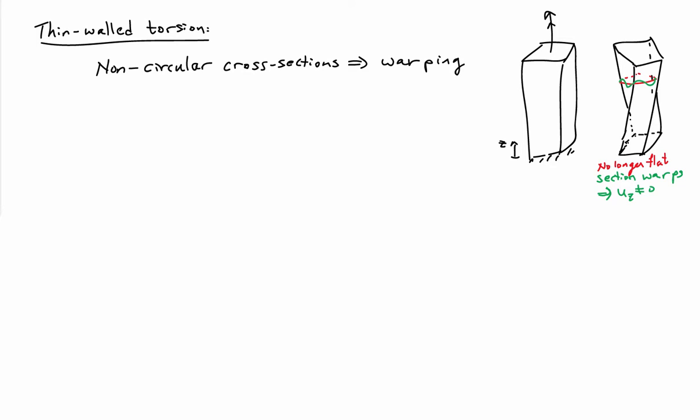The theory of torsion that we've developed up to this point applies to bars that have circular cross-sections. They can be solid or hollow, but the net cross-section always has to be circular in nature. And one of the reasons for that is that if you have a non-circular cross-section, then you have something known as warping of the cross-section.